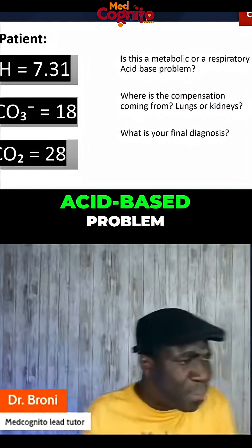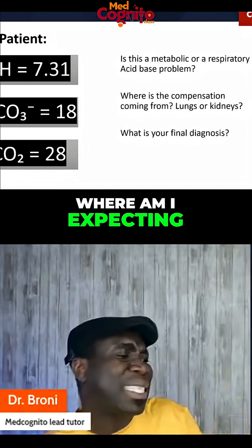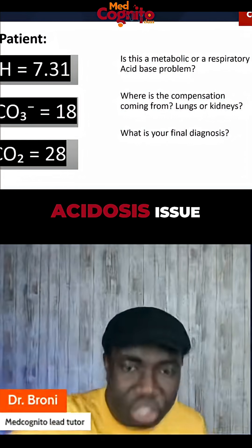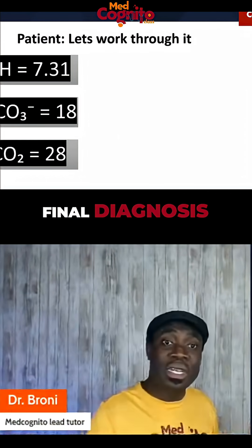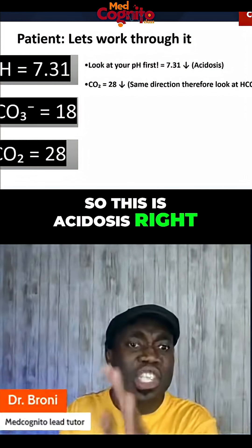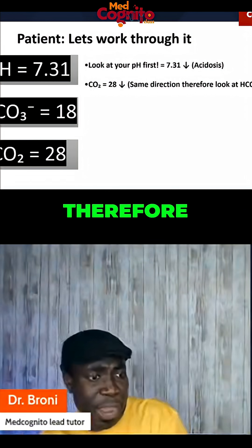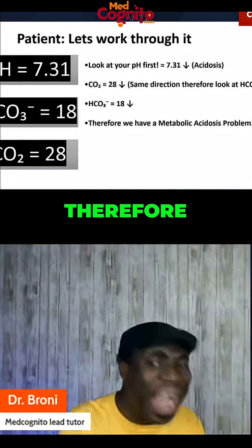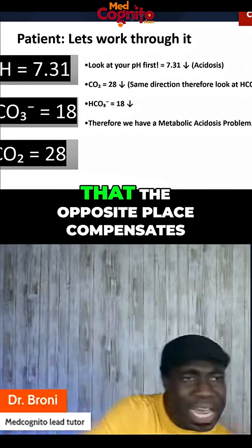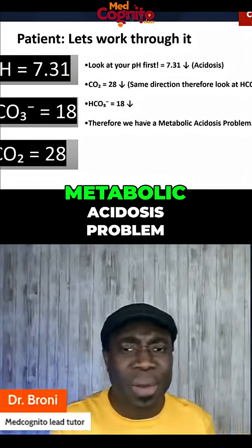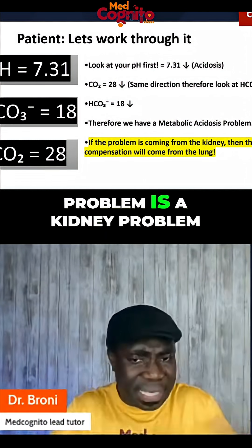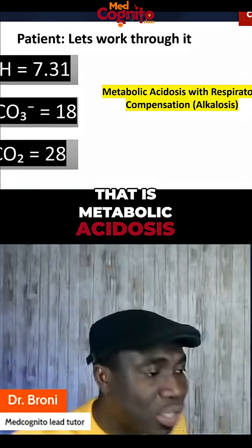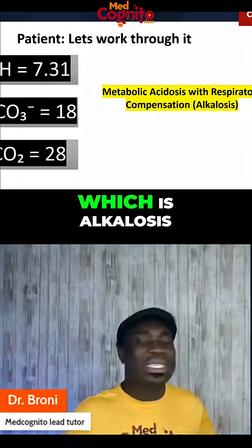If it's a metabolic acid-base problem — that is, the kidney is the main thing — where am I expecting the compensation to come from? The compensation will come from the lung, not the kidney, because the problem is a metabolic acidosis issue. The pH was low, so this is acidosis. CO2 was also low, so they are going in the same direction. I bring in HCO3, and HCO3 is also going in the same direction. Therefore, I have a metabolic acidosis problem. Remember our rule: the opposite place compensates. If it's a metabolic acidosis problem — meaning the problem is a kidney problem — then the compensation will come from the lung. That is metabolic acidosis with respiratory compensation, which is alkalosis.